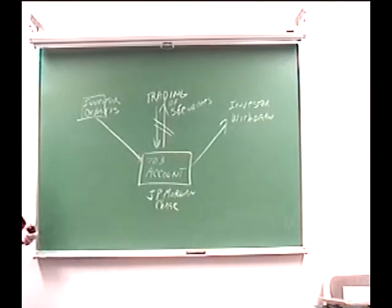The argument that the trustee is making is J.P. Morgan was making a fortune on this, and they should have known, which is why they're being sued for $6.2 billion and not $300 million.